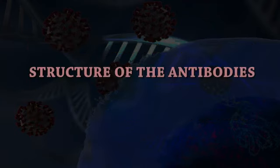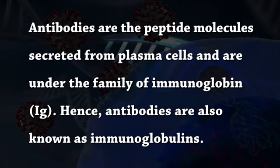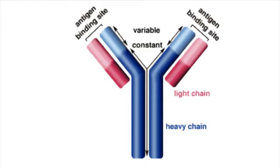A, structure of the antibodies. Antibodies are peptide molecules secreted from plasma cells and are under the family of immunoglobulin. Hence, antibodies are known as immunoglobulins (Ig). They consist of two light and two heavy chains — these are the two kinds of protein chains. Two light chains are identical and two heavy chains are also similar to each other.